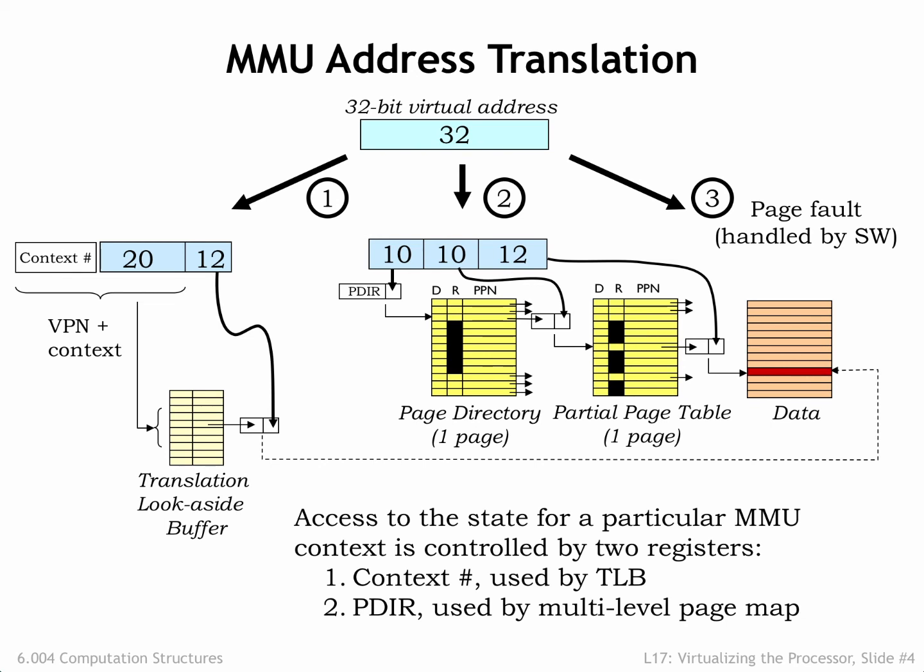We'll also need some number of physical pages to hold the required page directories and segments of the page tables. For example, for a particular process, three pages will suffice to hold the resident two-level page map for 1024 pages at each end of the virtual address space, providing access to up to 8 megabytes of code, stack, and heap — more than enough for many simple programs.